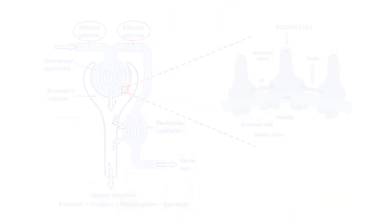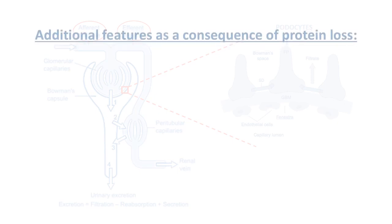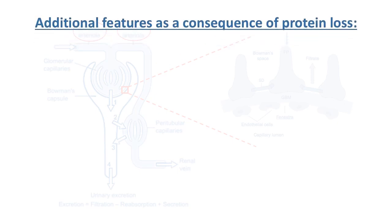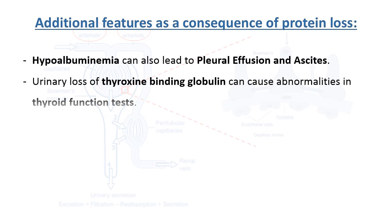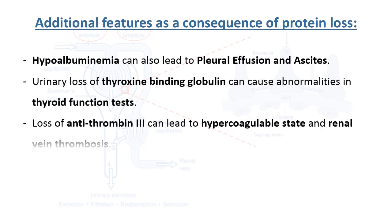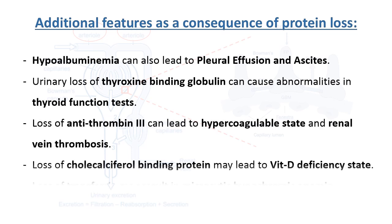So this covers the basic pathophysiology of nephrotic syndrome. There are more additional features as a consequence of protein loss, which are pleural effusion and ascites, both due to hypoalbuminemia.